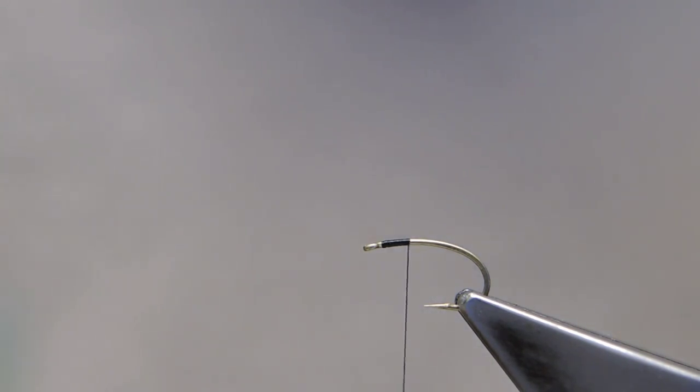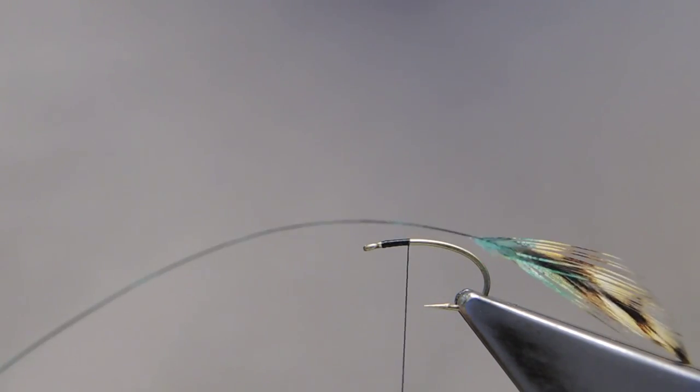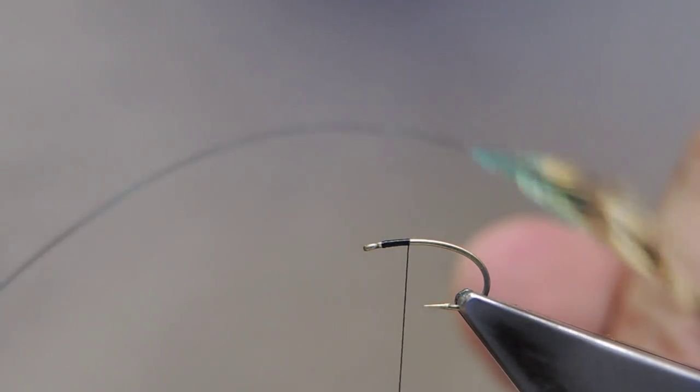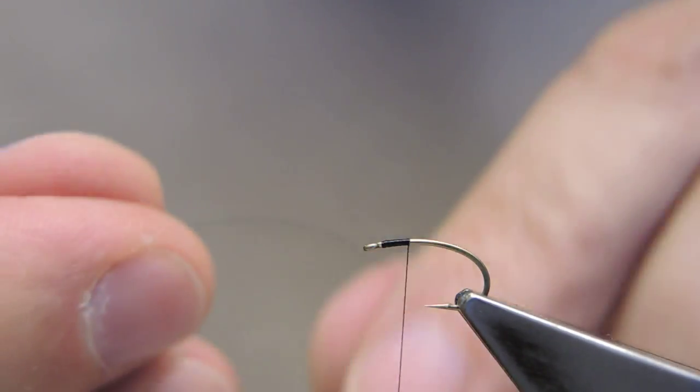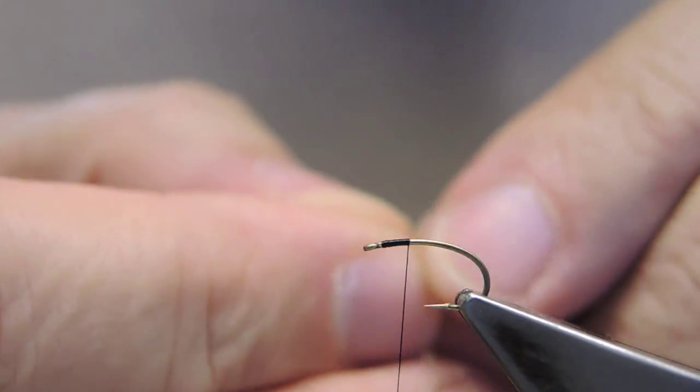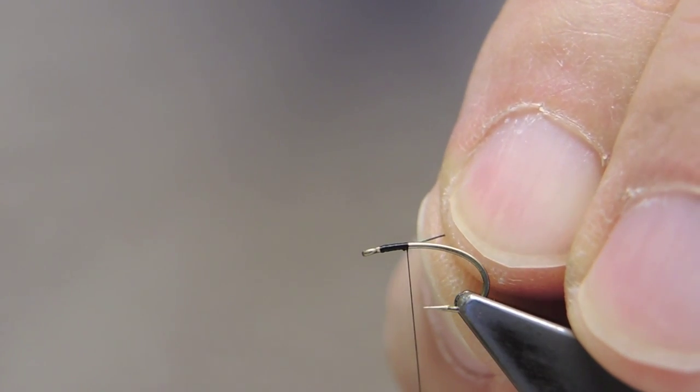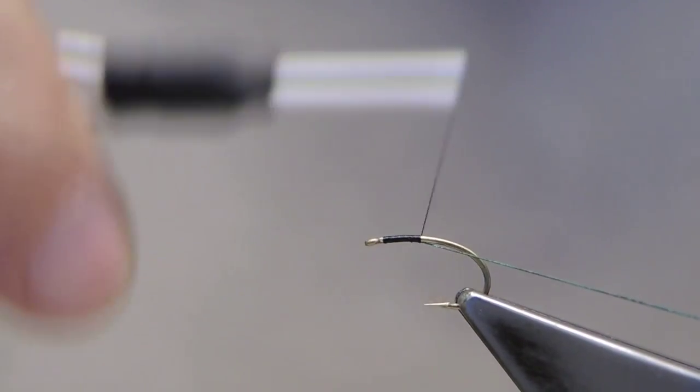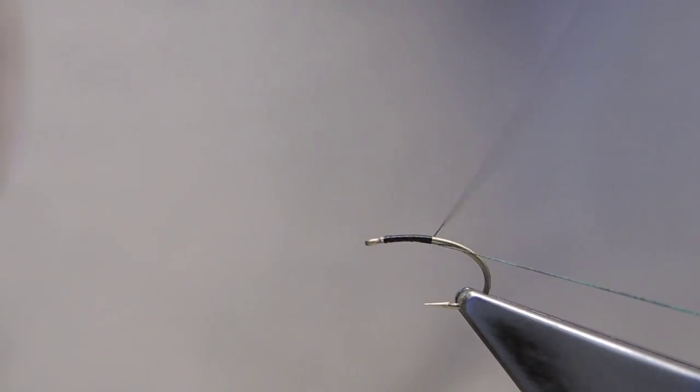The abdomen material is a large hackle that I've stripped of barbs, and then used a green permanent marker to stain it. Just snip away that tip, then tie it in underneath, keep it there as the thread is advanced, till well into the bend, in touching turns.